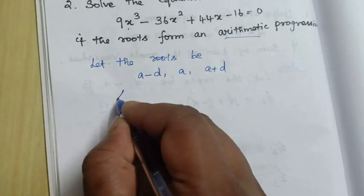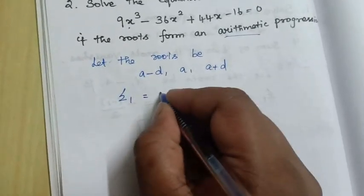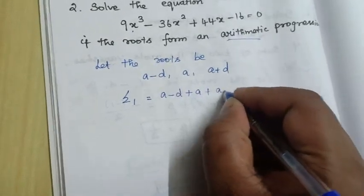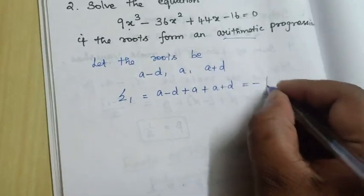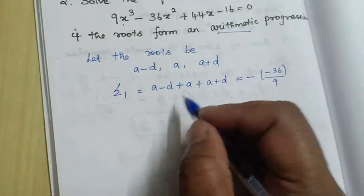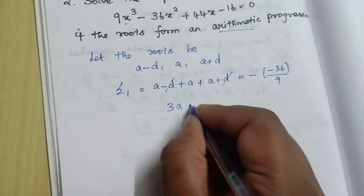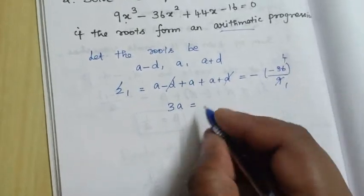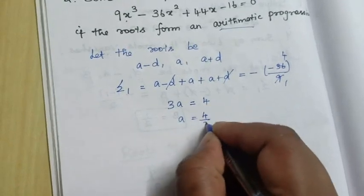By Vieta's formula, the sum of the roots taken one at a time equals minus b by a. So, (a minus d) plus a plus (a plus d) equals minus of minus 36 divided by 9. Here d gets cancelled, so we get 3a equals 4, therefore a is equal to 4 by 3.